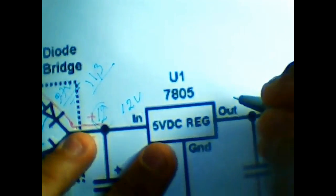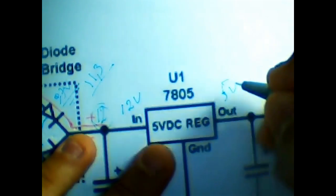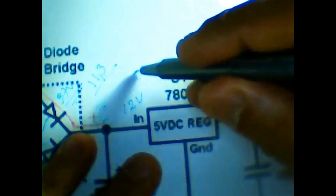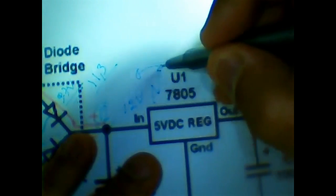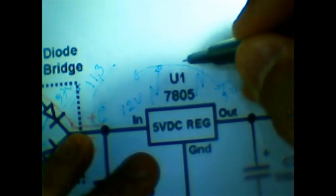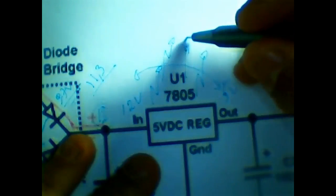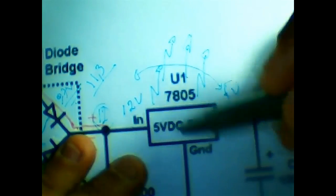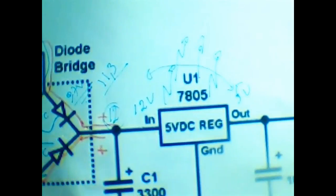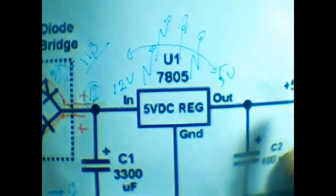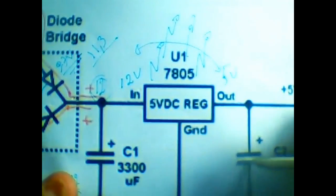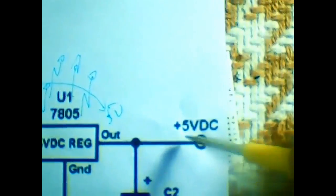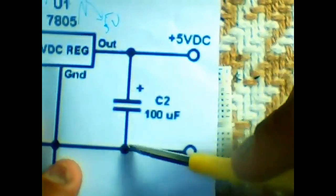If you're asking where the missing voltage goes, it actually goes as heat. So if you're using a 5-volt or 9-volt regulator, you might want to think about using a heat sink.